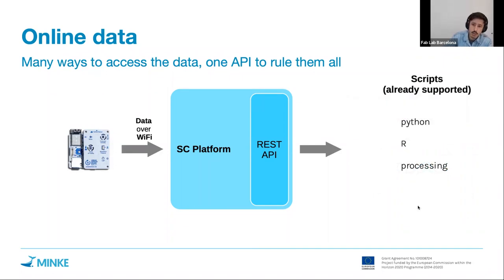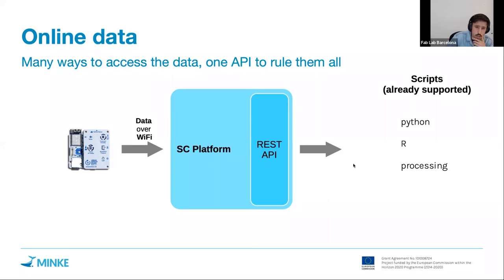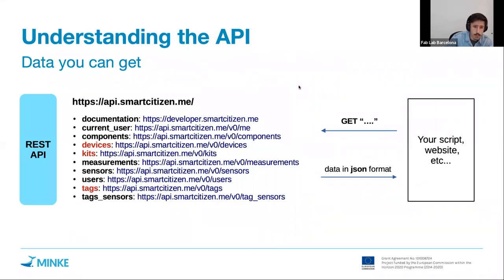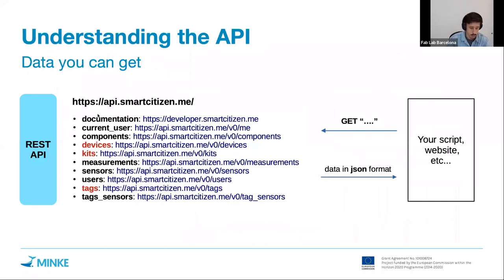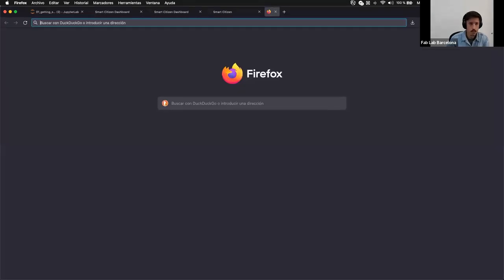We currently support different scripts and ways to access the data through the API. We will see today how to get data in R and how to get data in Python, but any scripting language capable of doing HTTP requests can interface with our API in a very similar way. It's important to understand the basics so that at some point you can program your own interfaces. Let's walk through an example of how the API works.